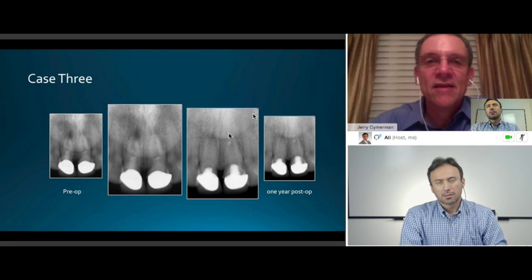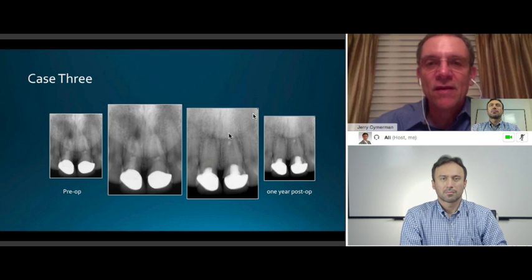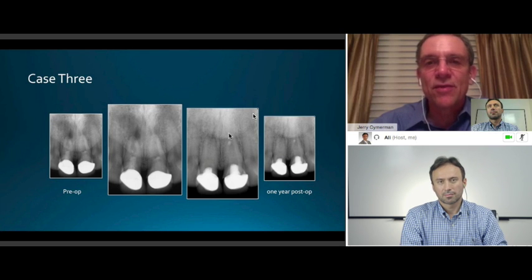Typically, these teeth would be extracted and maybe implants would be placed. I saw the patient for a two-year follow-up. The general dentist is going to place new crowns on these teeth now and just do core buildups.